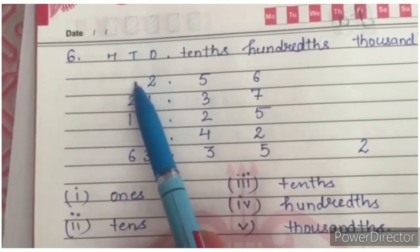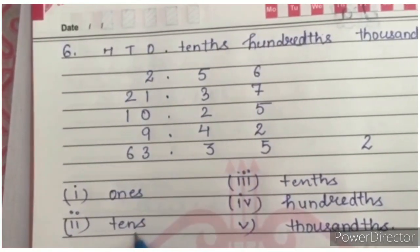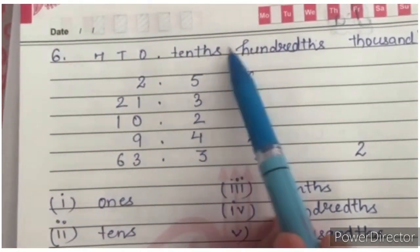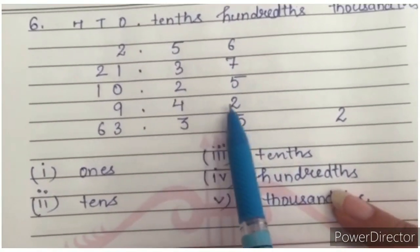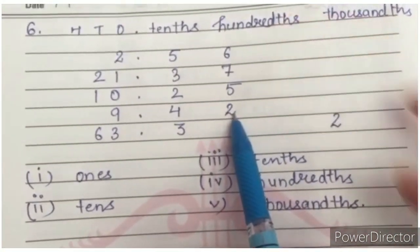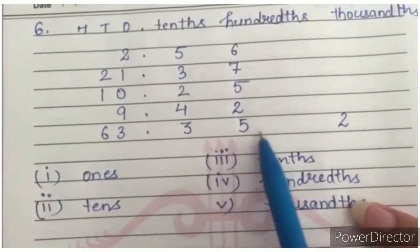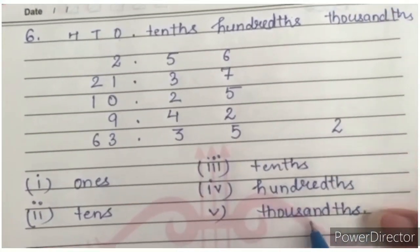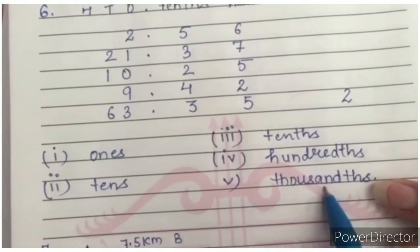Here, this 2. What is the place value of this? Tenths. We will write this 2 under hundredth. We will write hundredth. This 2, it is under thousandth. So we will write its place value as thousandth.